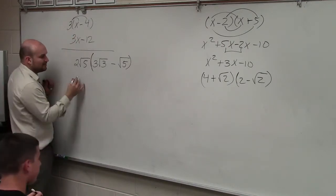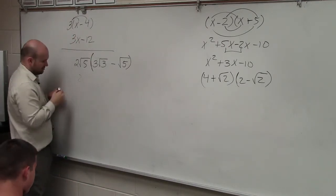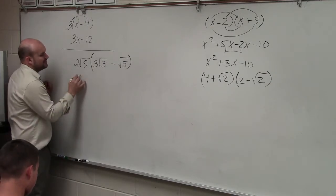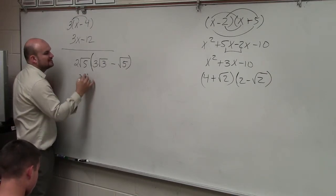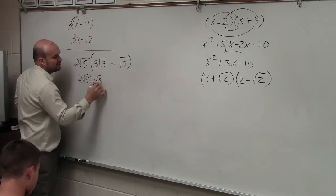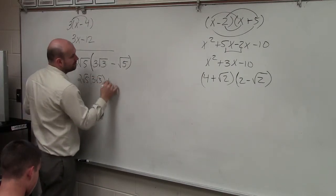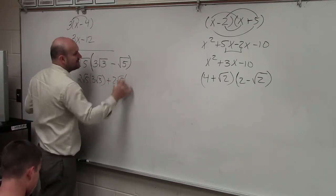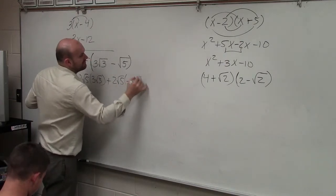We're doing 2 square root of 5 times 3 square root of 3. We're doing positive 2 square root of 5 times negative square root of 5. Now,